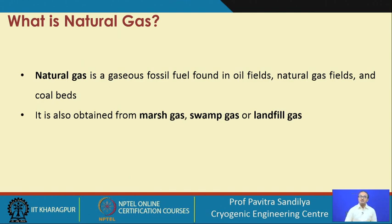Natural gas is also obtained from various other land sources like marsh gas. Wherever you find some wetland, because of anaerobic oxidation, we get some kind of gases which are also called natural gas, swamp gas, or landfill gases.